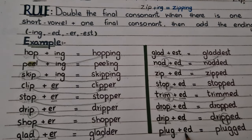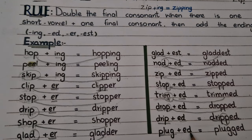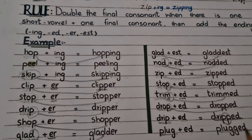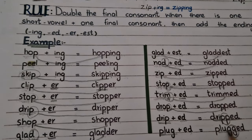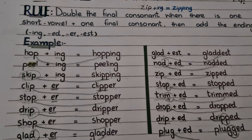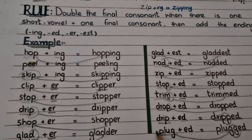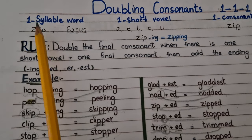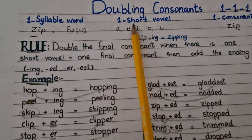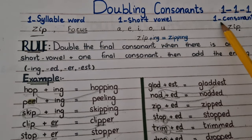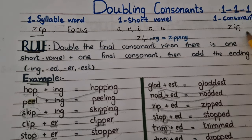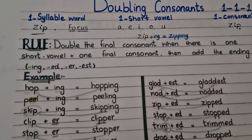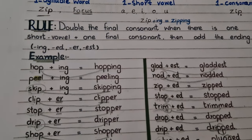'Plug'. When we add a suffix at the end of the word, it will become 'plugged' — and we double the final consonant, because this word also follows the 1-1-1 rule. So always remember: if a word has one syllable, one short vowel, and one consonant at the end of the word, then we will double the final consonant. If this video is helpful for you, please like it and don't forget to subscribe for more lesson updates. Thank you.